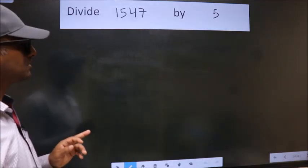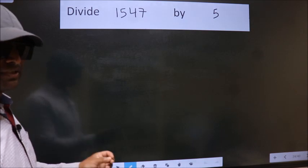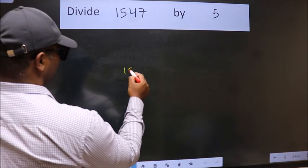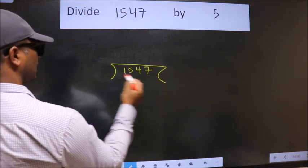Divide 1547 by 5. To do this division, we should frame it in this way. 1547 here, 5 here.